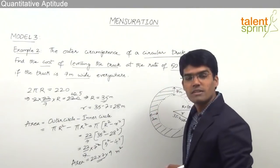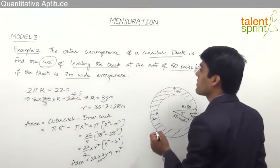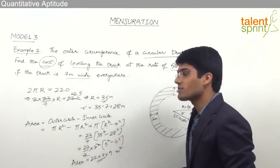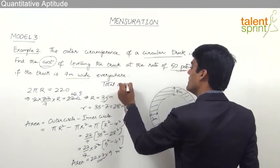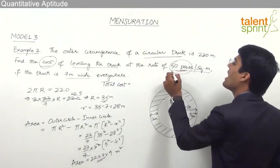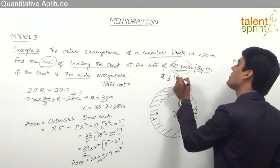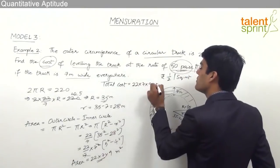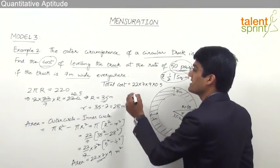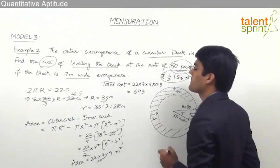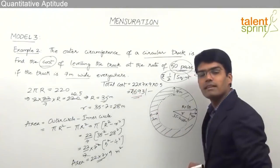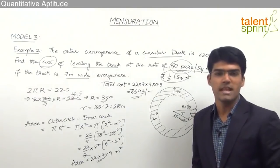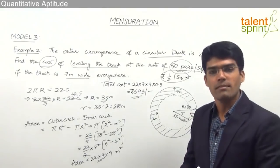All dimensions are in meters so the area is in square meters. The cost of leveling is 50 paisa per square meter, which is 0.5 rupees per square meter. Total cost = 22 × 7 × 9 × 0.5 = 693 rupees. So the answer is 693 rupees. This is how, for any footpath along the boundary of a two-dimensional shape, we find the area as outer shape minus inner shape and then calculate the required answer.